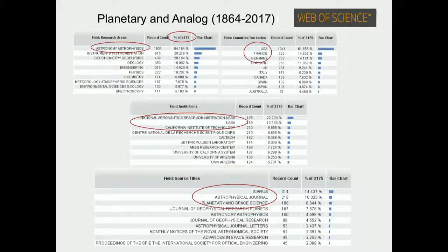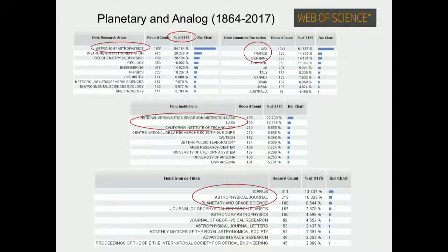A second search relating 'Mars' and 'analog' gives slightly fewer than 2,000 records. The research areas are astronomy and astrophysics, with geology appearing as the second discipline, and geochemistry and geophysics. Countries are similar — USA, England, Germany, France. The main journals are Icarus, Journal of Geophysical Research Planets as second, Planetary and Space Science, and notably Astrobiology appears as the fourth journal — very important. Leading institutions are NASA, Ames Research Center, Caltech, and JPL.